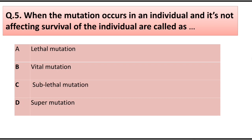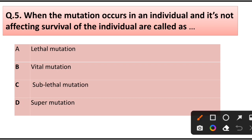Question number 5. When mutation occurs in an individual and it does not affect the survival of the individual, it is called: lethal mutation, vital mutation, sub-lethal mutation, or super-mutation. Answer is option B: Vital mutation.